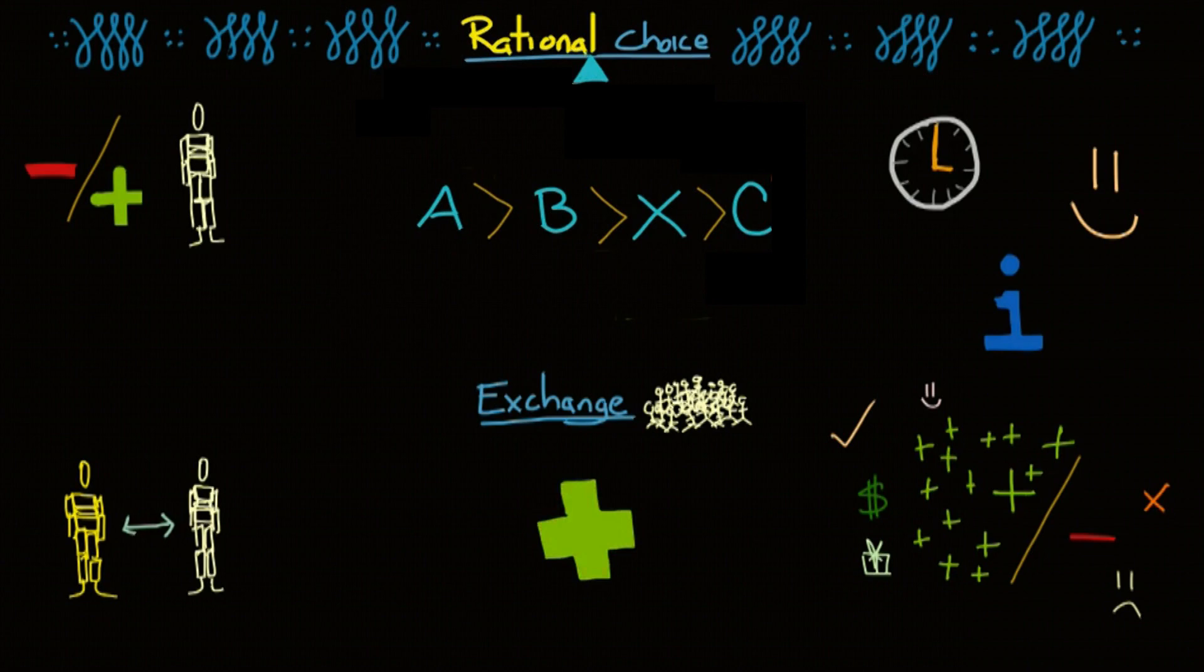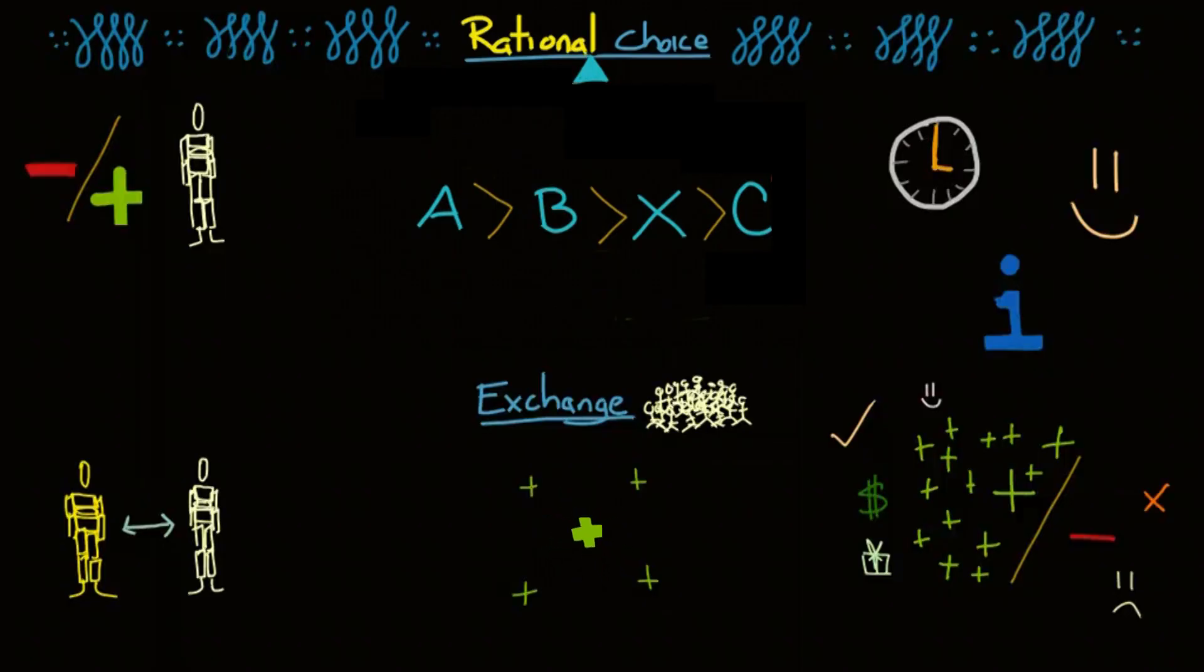Then is the assumption that behavior that results in a reward is likely to be repeated. Just like I mentioned before about rewarding interactions being repeated. But what is interesting is that exchange theory assumes that the more often some reward is available, the less value that reward has. Kind of like supply and demand. When the supply is too high, the price goes down.